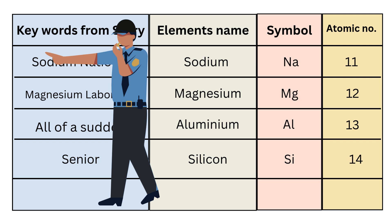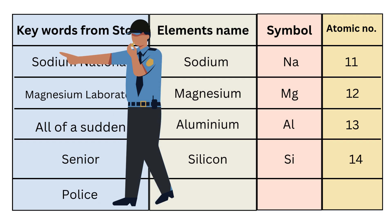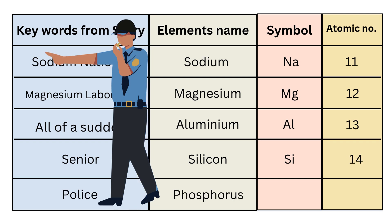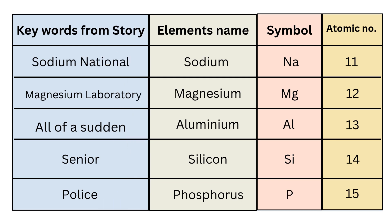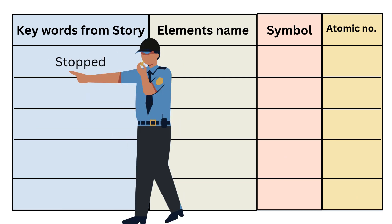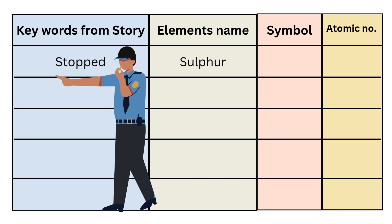Another key word is 'police', which helps you remember the element name Phosphorus. Its symbol is P, and atomic number is 15. Another key word is 'stopped', from which you can remember the sixteenth element name, that is Sulfur. Its symbol is S, and atomic number is 16.